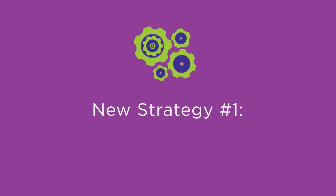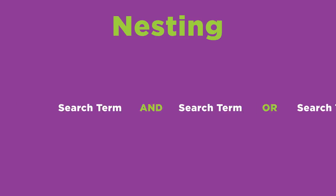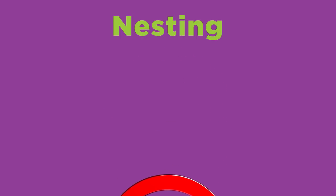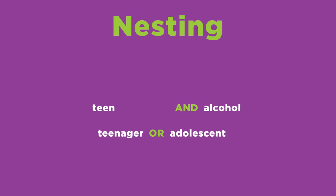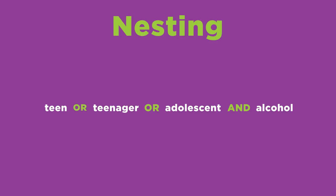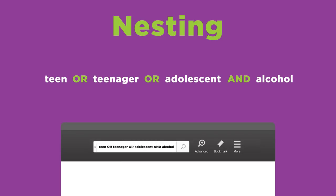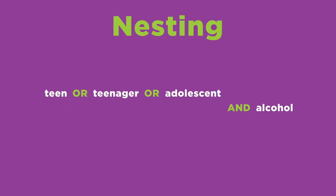Our first new strategy is called nesting. Nesting involves using parentheses to clarify relationships between search terms when using more than one Boolean operator. Let's say you're doing a report about the problems of teens drinking alcohol. Some keywords or search terms are teen AND alcohol. A teen is also commonly called a teenager or adolescent, so we should include those terms in our search string by combining them with OR. To find information about teens and alcohol, you could try this. However, this search string does not make it clear that TEEN and its two synonyms should be grouped together.